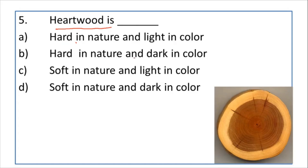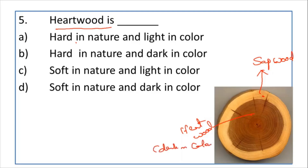The next question: hardwood is — options are hard in nature and light in color, hard in nature and dark in color, soft in nature and light in color, or soft in nature and dark in color. The cross section of timber has an outer portion called sapwood and an inner portion called heartwood. Sapwood is light in color and contains high moisture, so it is soft. Heartwood contains less moisture, so it is hard and dark in color. So hardwood is hard in nature and dark in color; sapwood is soft in nature and light in color.